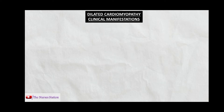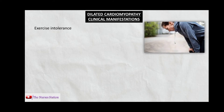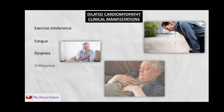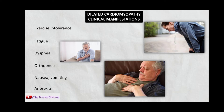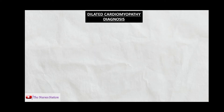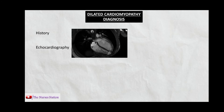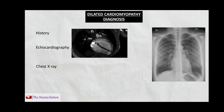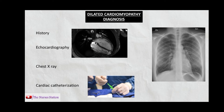Clinical manifestations include exercise intolerance due to decreased cardiac output, fatigue, dyspnea due to pulmonary edema, orthopnea (difficulty breathing when lying flat), nausea, vomiting, and loss of appetite (anorexia). Diagnosis of dilated cardiomyopathy can be made based on history, echocardiography which uncovers structural abnormalities and systolic and diastolic dysfunctions, chest X-ray (which shows an enlarged heart shadow in heart failure), and cardiac catheterization.